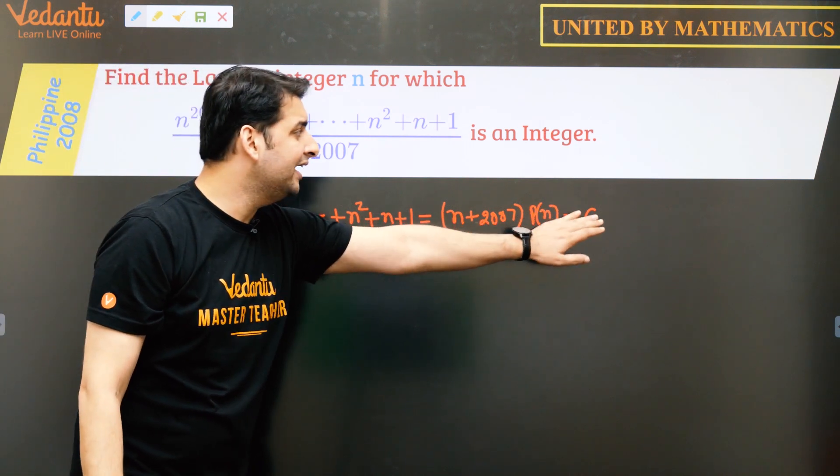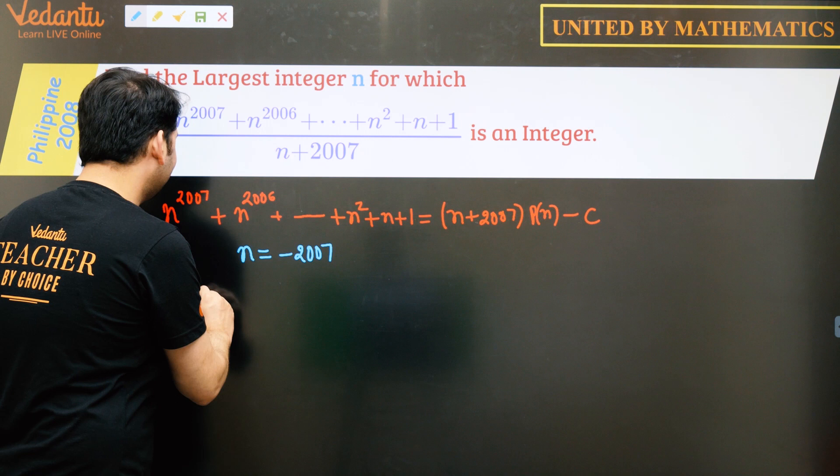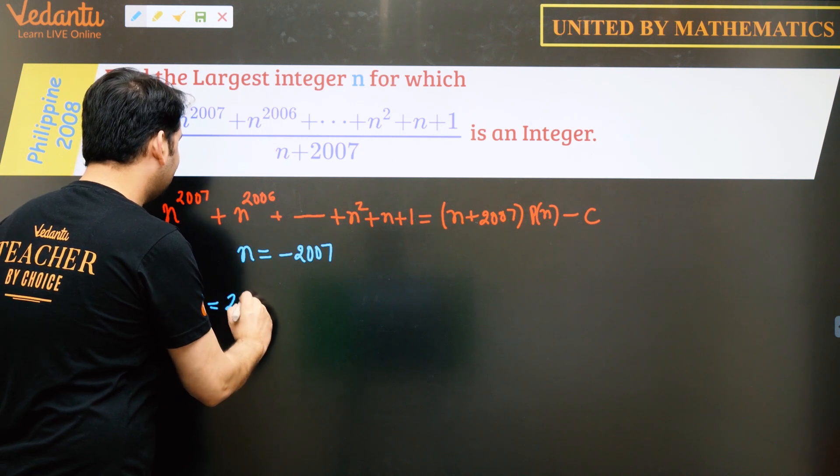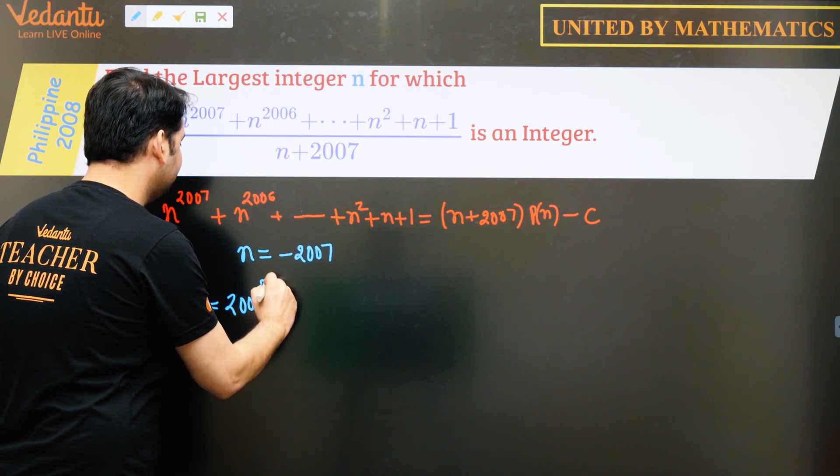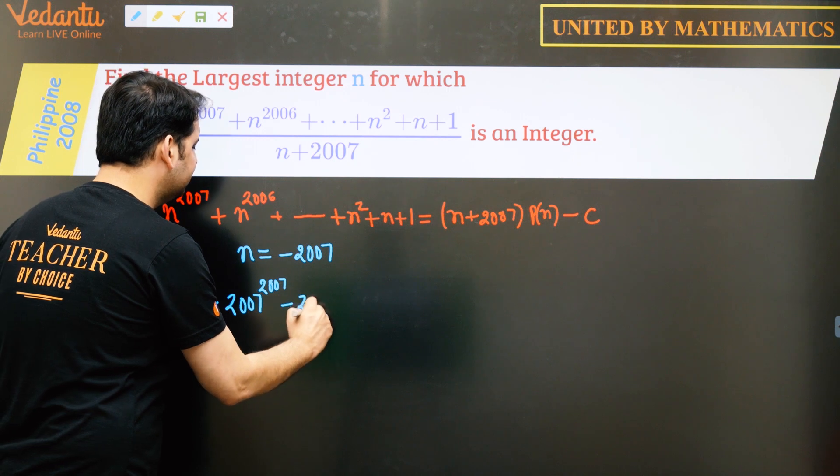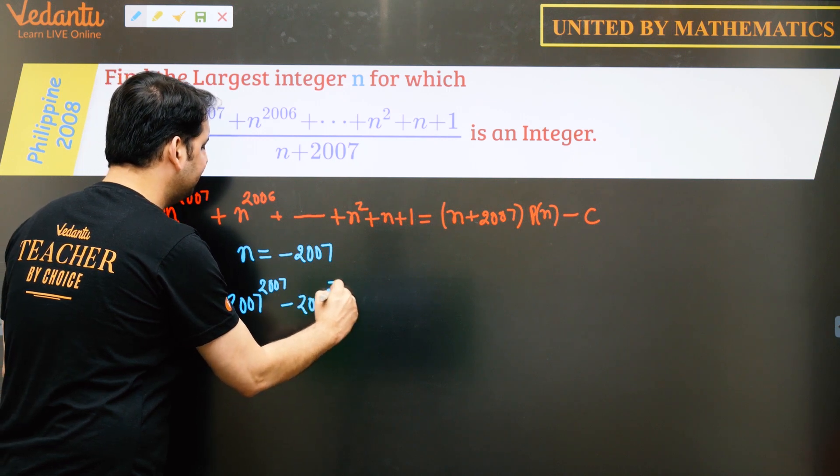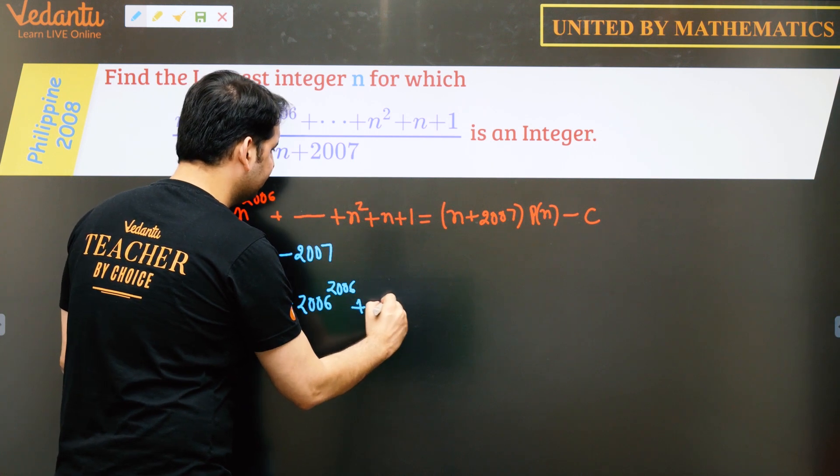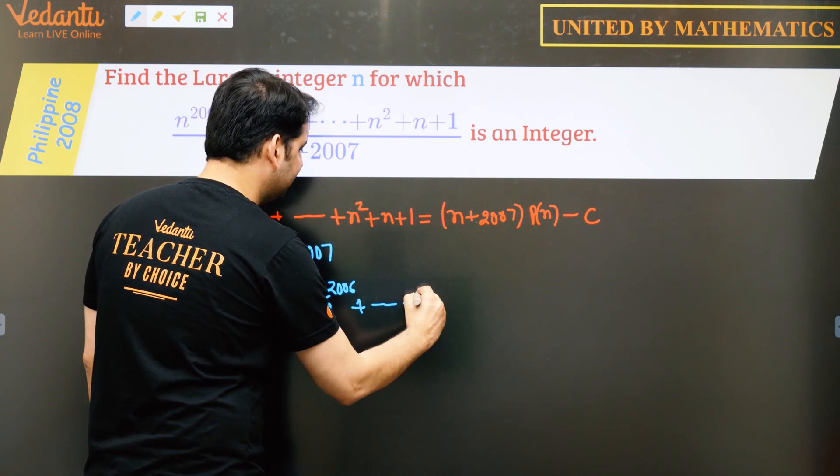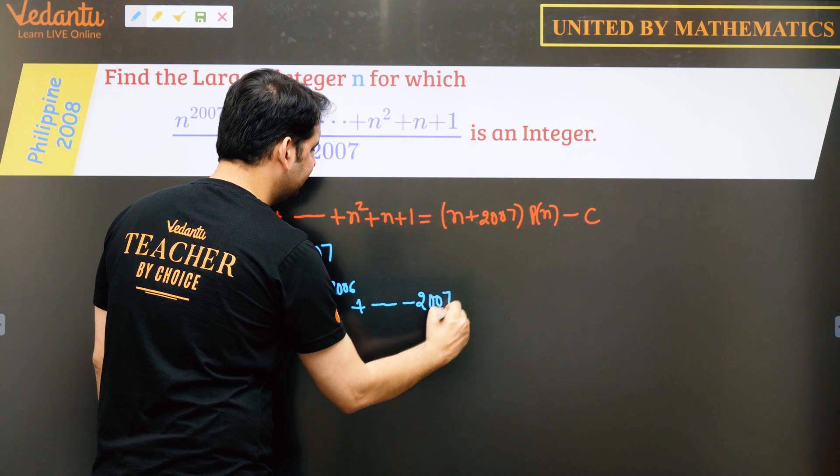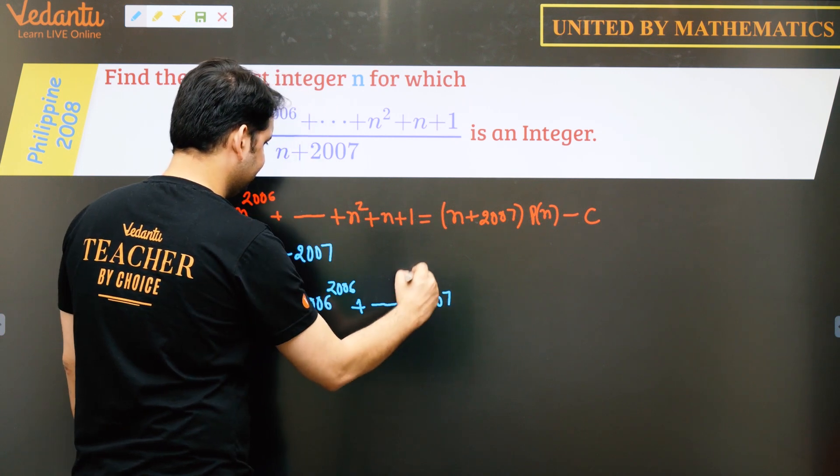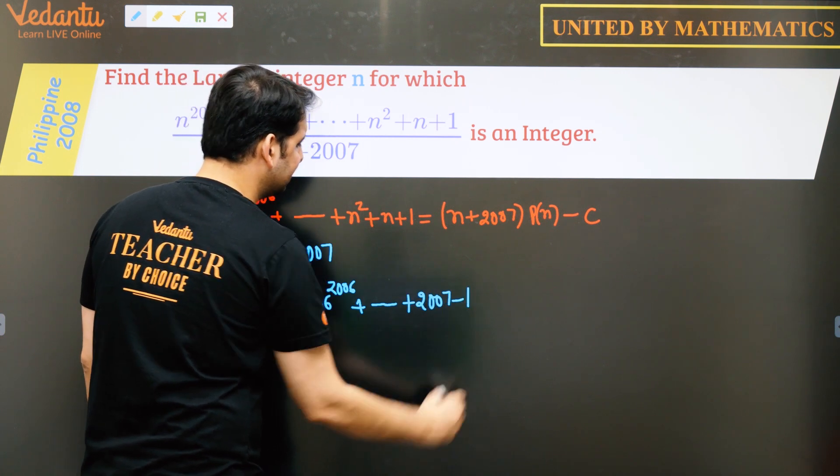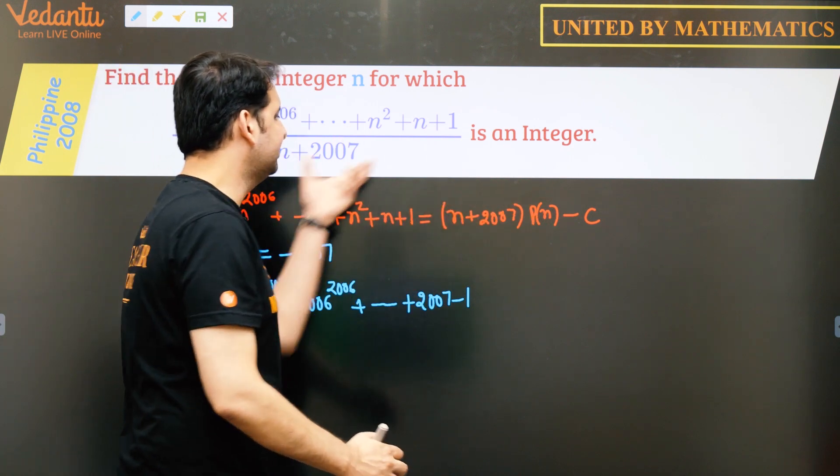So if we put n as minus 2007, this part goes 0. So if we find the value of c, c comes out to be 2007 to the power 2007 minus 2006 to the power 2006 and so on, it will go till minus 2007 or plus 2007 minus 1. So c goes here, this term goes here.